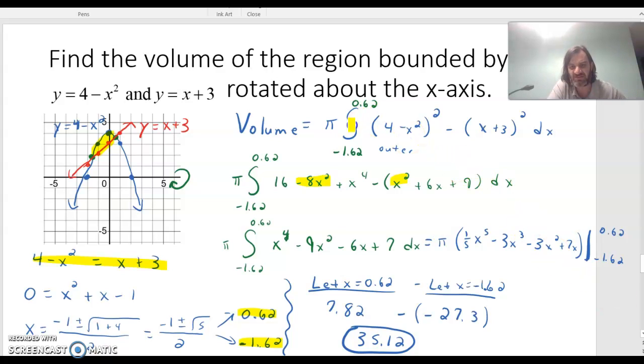So as we set up the integration, we'll have pi from negative 1.62 to 0.62. And then the outer radius is the parabola, 4 minus x squared. And of course that radius will be squared. And then minus the inner radius of x plus 3 and that'll be squared. And all that's in terms of x, so dx.